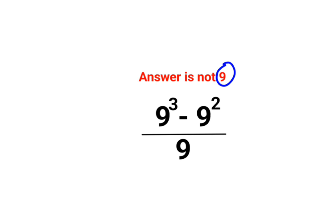See, understand, a lot of people think this is cancelling. So we have 9 square minus 9. So yes, then I don't know why people think that the answer is supposed to be 9.